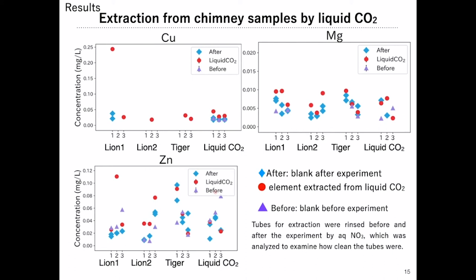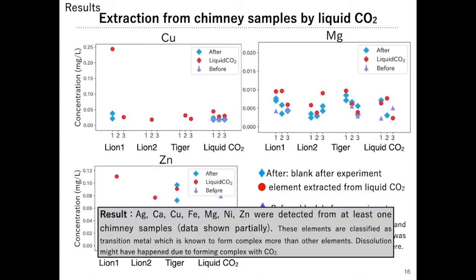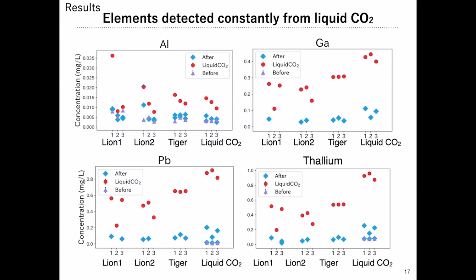Elements silver, calcium, copper, iron, magnesium, nickel, and zinc were detected from at least one of the chimney samples. These elements are classified as transition metals, which are known to form complexes more readily than other elements, suggesting that dissolution may have occurred due to complex formation with CO2. Results also show elements that were constantly detected from liquid CO2 extraction samples regardless of chimney powders — we think these elements were dissolved from the tank itself. They are classified as the boron group, which is known to form complexes with alkali ions. CO2 may have formed a complex by acting in its carbonate form, CO3 2-.